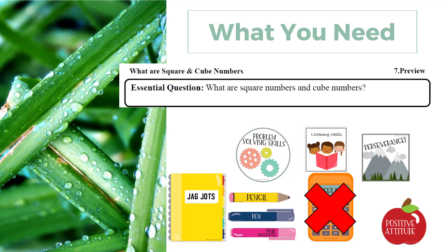Today you'll need your jackpot drops on section seven point preview, a pen or pencil, and you might find a highlighter useful. Put away those calculators — you're not going to need them today. Have a positive attitude, perseverance, problem-solving skills, and this time bring your listening skills because we're going to start off with a story.